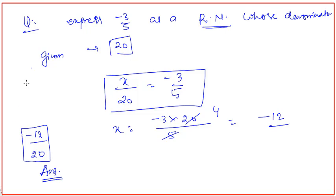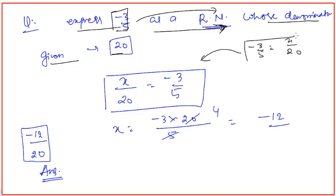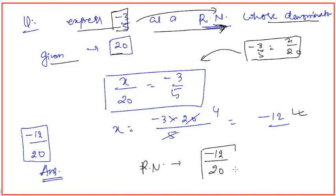Let us look at this question carefully — very important point. Express minus 3 by 5 as a rational number. We have to make one equivalent rational number whose denominator is given as 20. So we consider minus 3 by 5 equal to x by 20. Solving, x equals minus 12, so the rational number is minus 12 by 20.